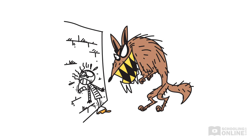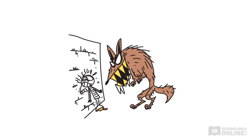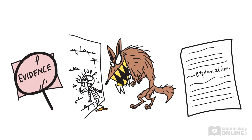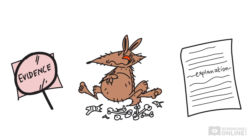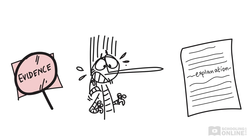Thinking back to our example from The Boy Who Cried Wolf, our main point was that lying has some pretty nasty consequences. We used an evidence and explanation block to prove how the boy suffered a personal consequence for his behavior — he was eaten. We might also like to include an example which proves that he was lying in the first place to set up our example about personal consequences.